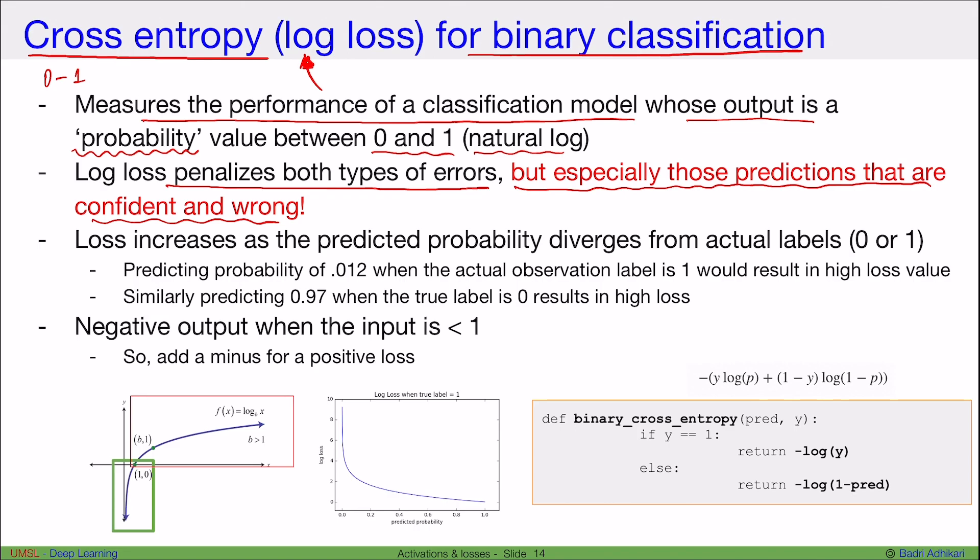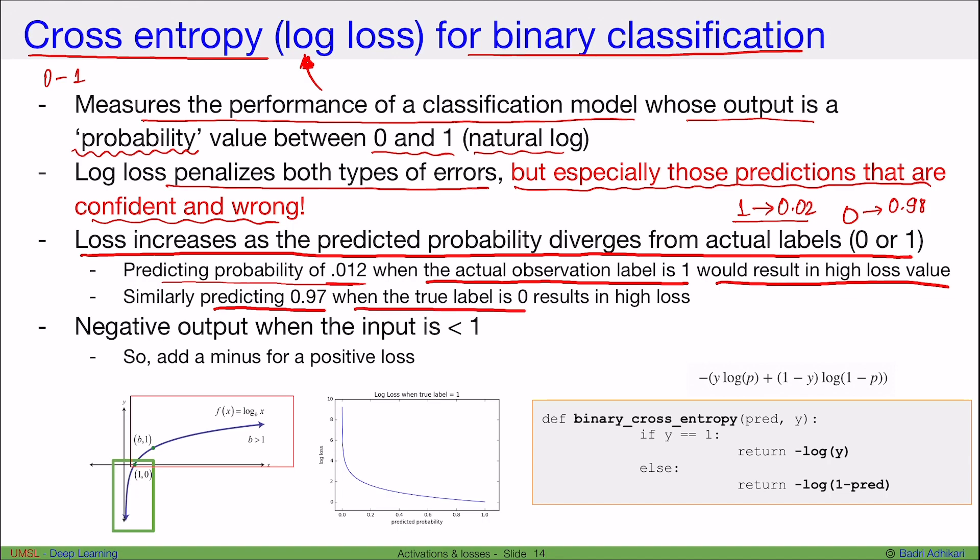Overall loss increases as the predicted probability diverges from the actual labels zero or one. So if your actual label is zero and you're predicting a probability of 0.98, then that's when you get a very high loss, or if your actual label is one and you're predicting a probability of 0.02, that's also when you get a very high loss. For example, predicting probability of 0.12 when the actual observation label is one would result in a high loss value. Similarly, predicting 0.97 when the true label is zero results in a high loss.